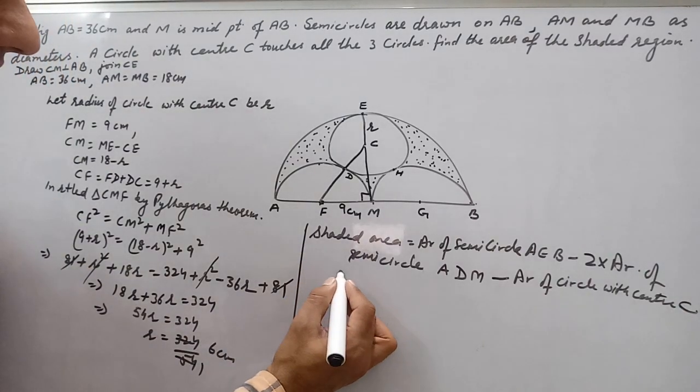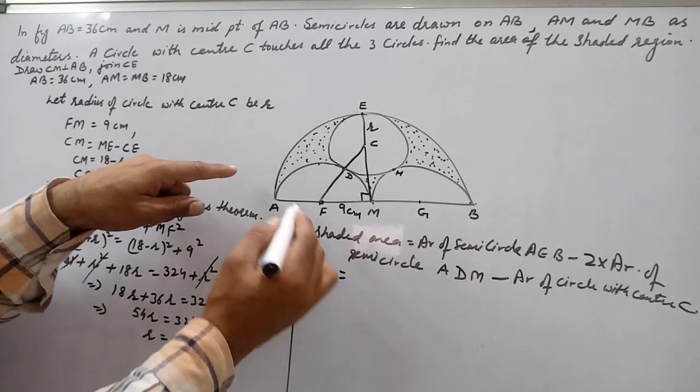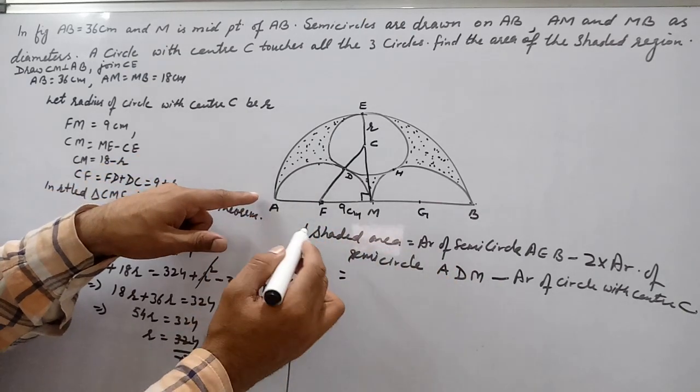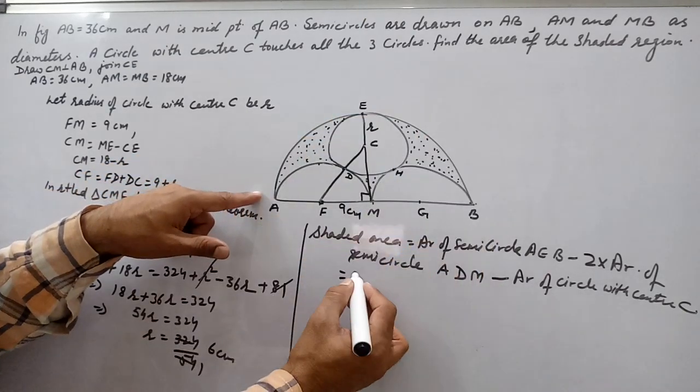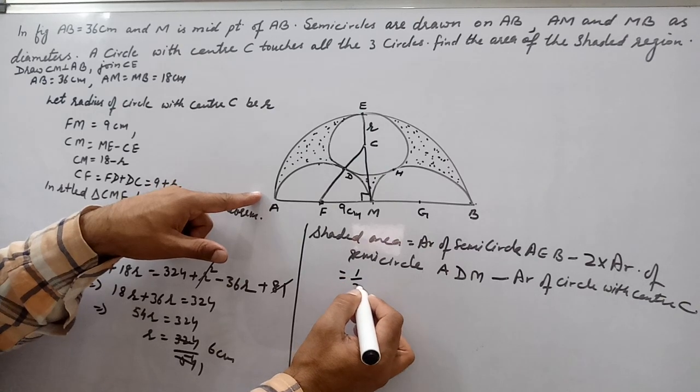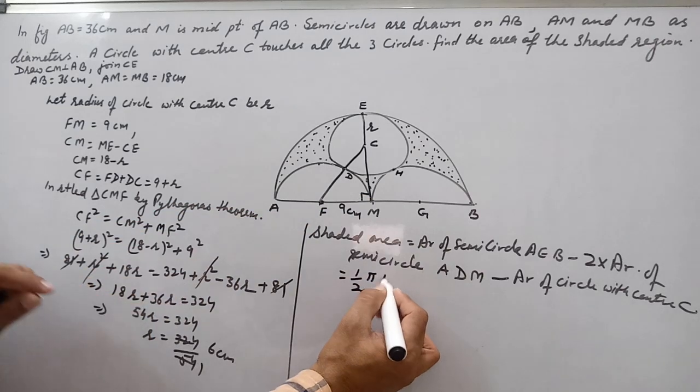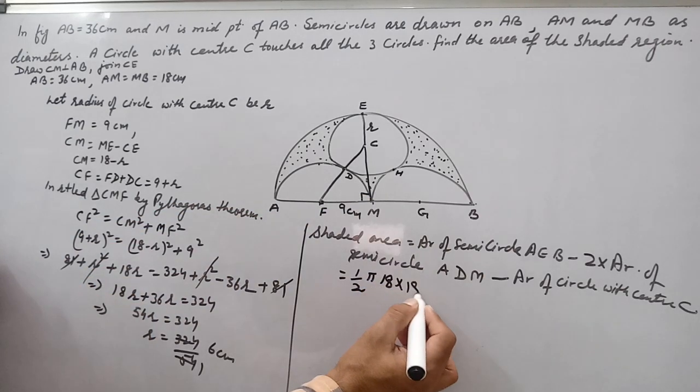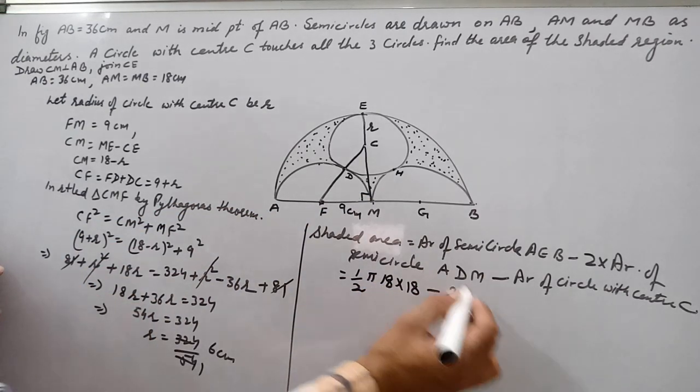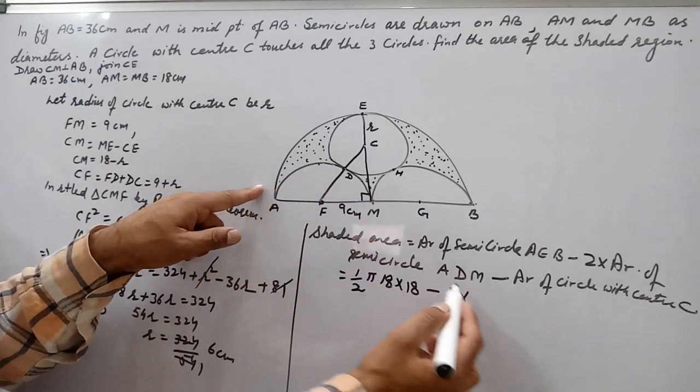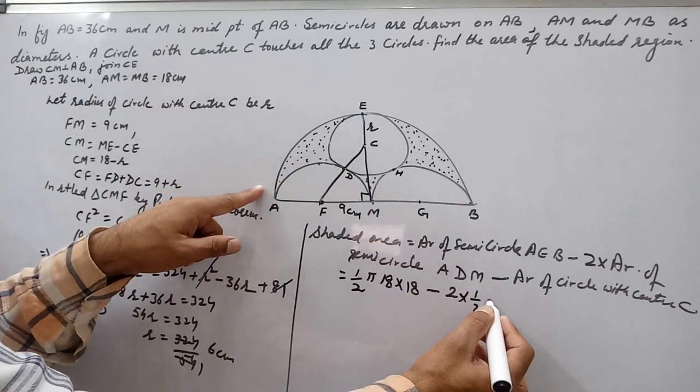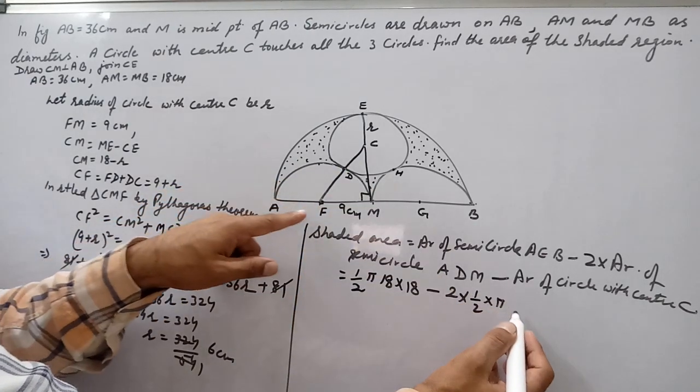Let's see what is shaded area. Area of semicircle AEB is half π R², radius is 18, so 18 × 18, minus 2 into area of this semicircle is half π, R is 9, so 9 × 9.